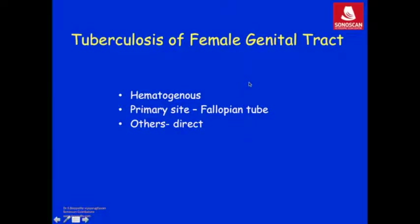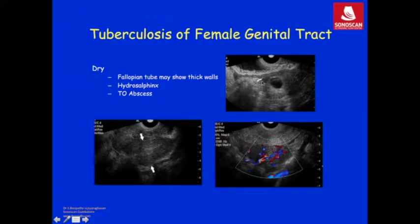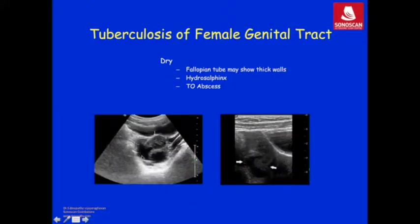Coming to tuberculosis of the female genital tract: the spread is hematogenous, with the primary site being the fallopian tube and other parts infected by direct contiguity. Because it is intraperitoneal, there are two forms — wet and dry. In the wet form, there is usually septated ascites with echoes or particles in the ascitic fluid and thickened fallopian tubes floating in the ascitic fluid. In the dry form, you may see thick-walled fallopian tubes with hyperemia on color Doppler, a tubo-ovarian abscess, or hydrosalpinx.